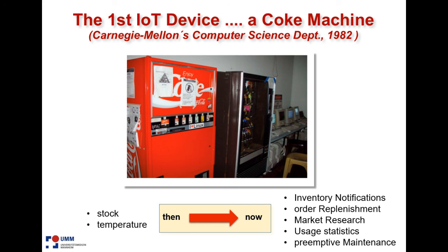So they came up with a device — they equipped this machine with sensors, temperature sensors — and they were able to see remotely, through their computers, whether or not there was still enough Coke in the machine. That's allegedly the first Internet of Things device, from 1982. Ever since, this has been evolving.